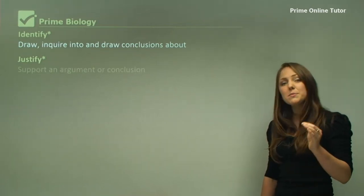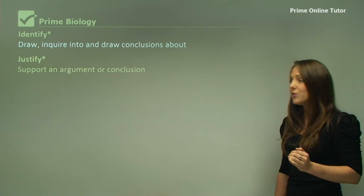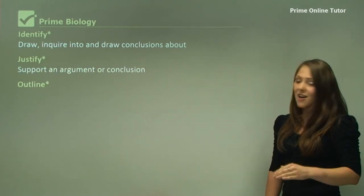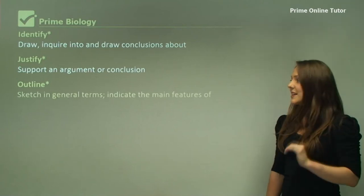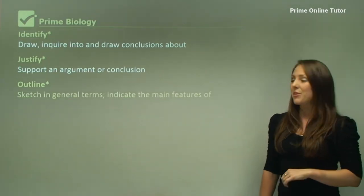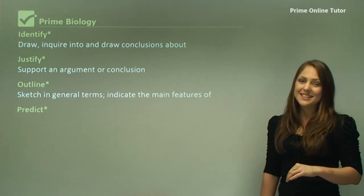Justify tends to be four to five marks, and you need to explain your reasons of why you've decided you're supporting an argument or conclusion. Outline tends to be dot points, so sketching general terms, indicate the main features of something.